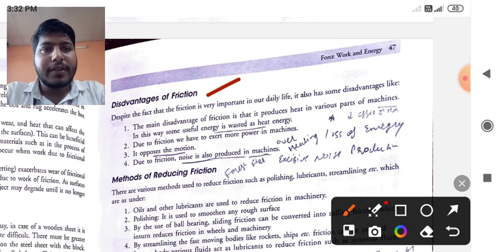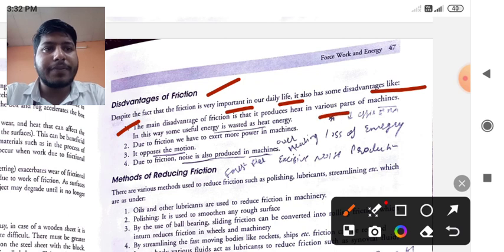Despite the fact that friction is very important in our daily life, it also has some disadvantages. Like, the main disadvantage of friction is that it produces heat in various parts of machine. In this way, some useful energy is wasted as heat energy.